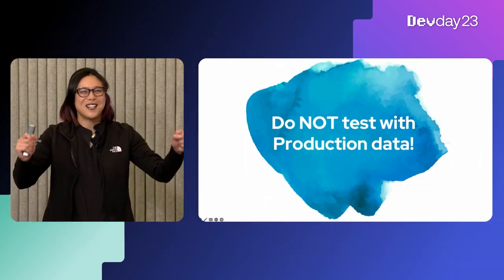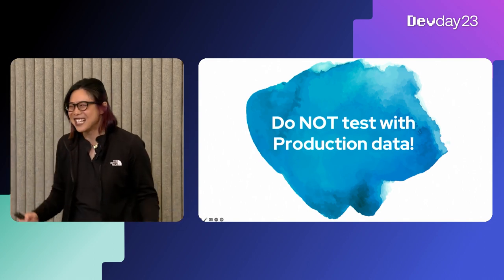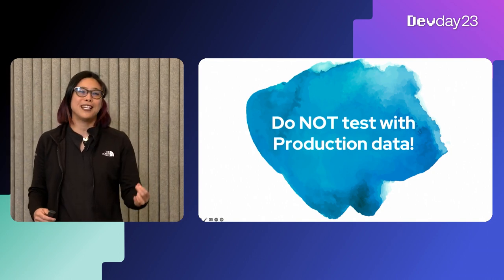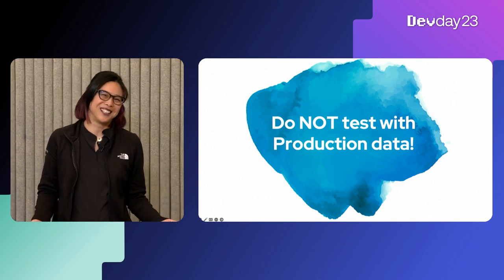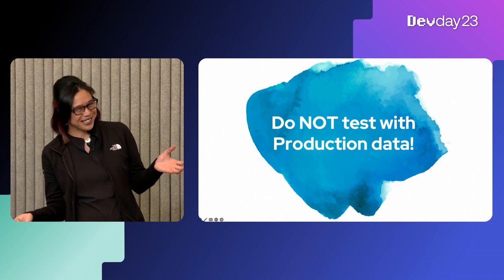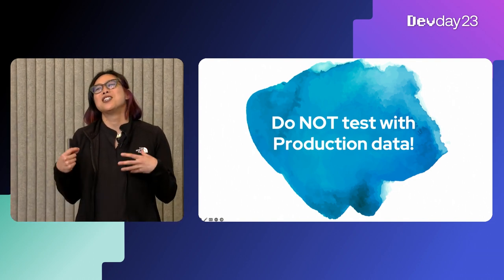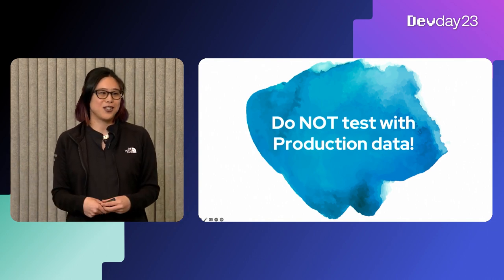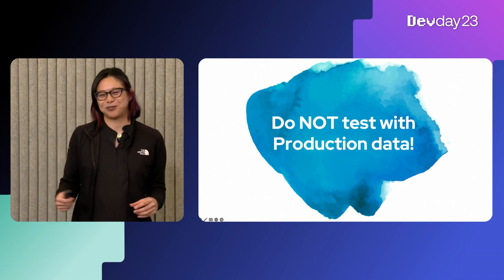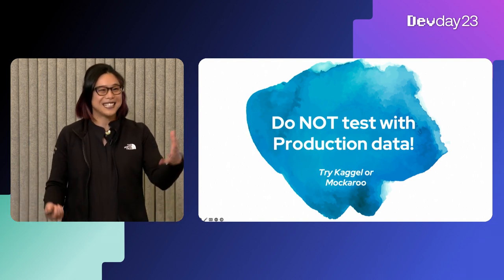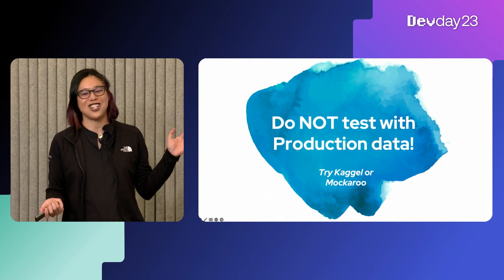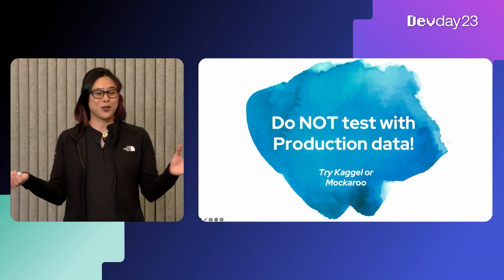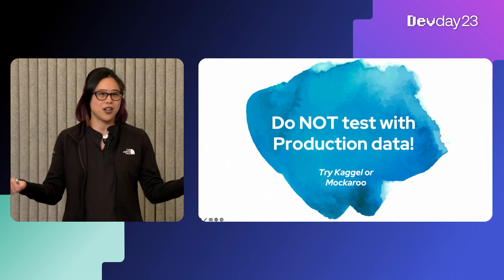Number six: do not test with production data. This is a violation of GDPR and other laws. Hackers will very commonly target your development environments because dev environments are never as hardened as production environments, and dev is inherently an unstable environment where configuration mistakes can happen. If you do need data sets for testing, you can check out Kaggle — K-A-G-G-L-E. My favorite data set at the moment is the Thailand tourism data. Also, Mockaroo if you just need to generate test data for things like CSVs or JSONs.